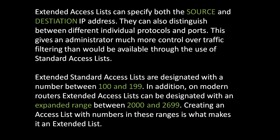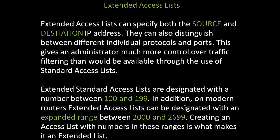Now we'll look at another basic type: extended access lists. Extended access lists can specify both a source and destination IP address. They can also distinguish between different individual protocols and ports. This gives an administrator much more control over traffic filtering than would be available through the use of standard access lists. Extended access lists are designated with a number between 100 and 199. In addition, on modern routers, extended access lists can be designated with an expanded range between 2000 and 2699. Creating an access list with numbers in these ranges is what makes it an extended list.